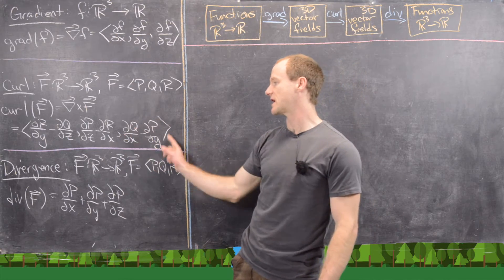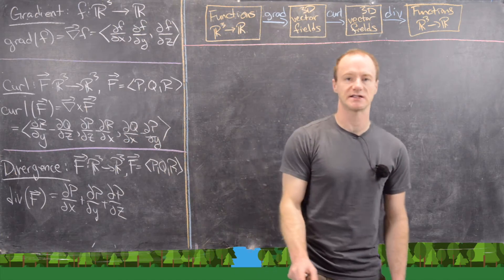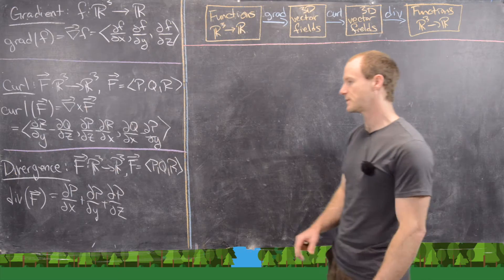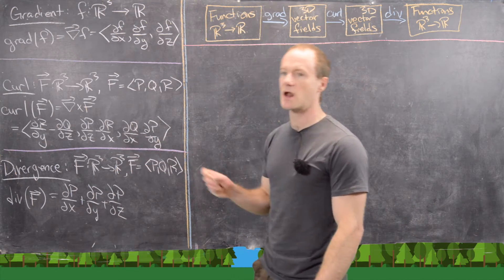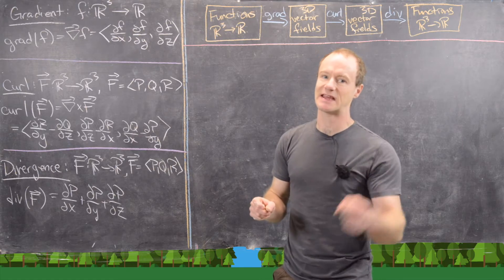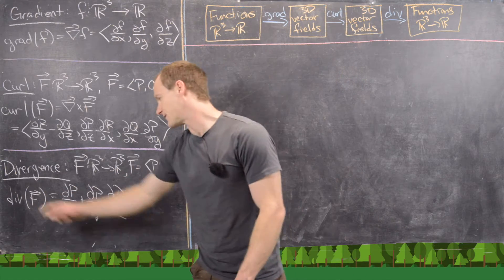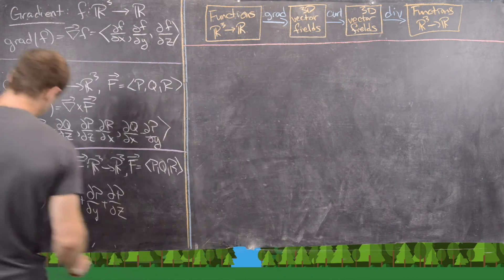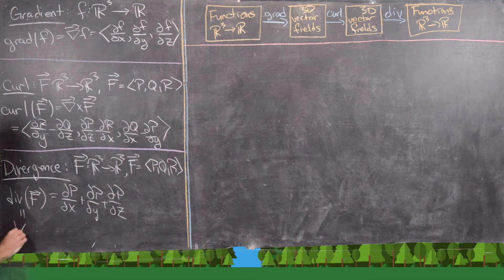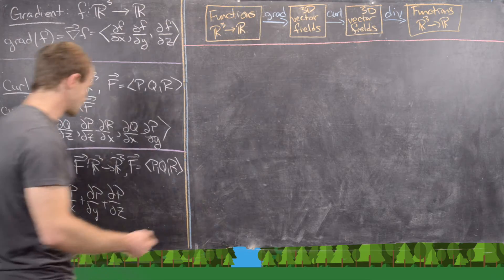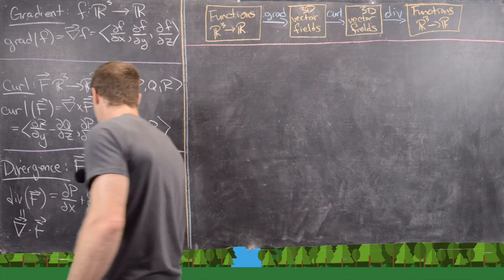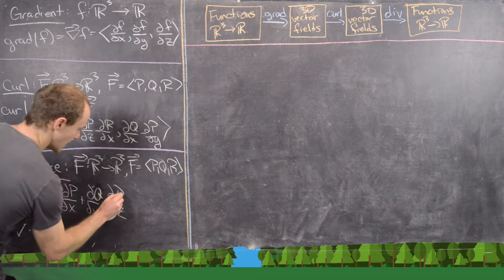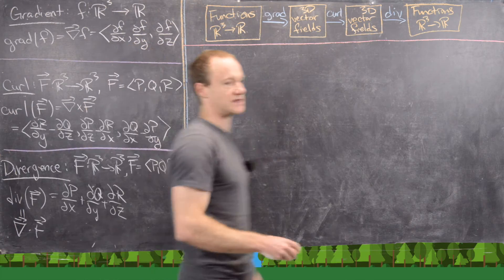Notice that last part looks an awful lot like something happening within Green's theorem. Then finally the divergence operates on a three-dimensional vector field and gives us a function. The divergence of F, sometimes written as del dot F, is partial P partial X plus partial Q partial Y plus partial R partial Z.